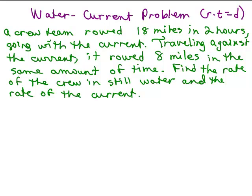A crew team rowed 18 miles in 2 hours going with the current. Traveling against the current, it rowed 8 miles in the same amount of time. Find the rate of the crew in still water and the rate of the current.